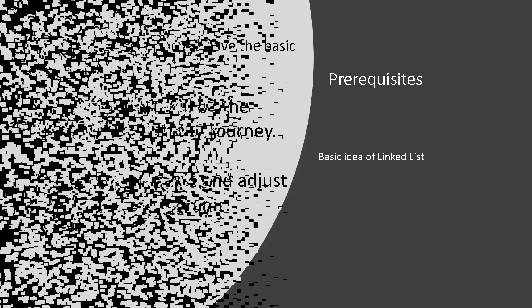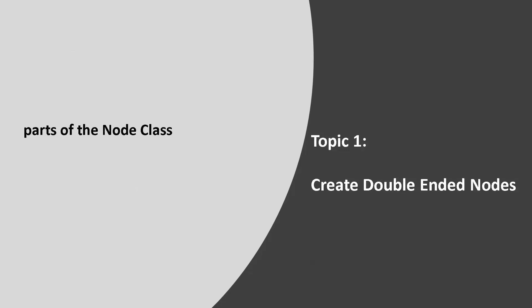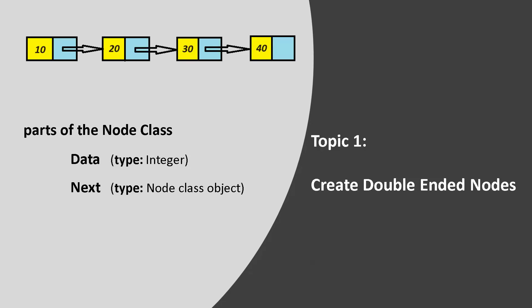What is the difference between double linked list and the linked list we have already done? In the previous linked list, we have a node class with a data part and one object part called next - which is basically an object of the node class pointing to the next node. So it looks like this: 10, 20, 30, 40. From 10 you can move to 20, from 20 you can move to 30.